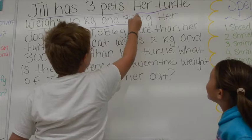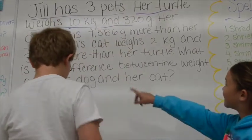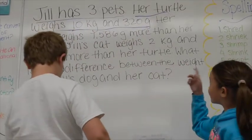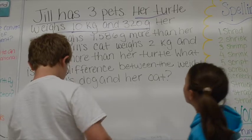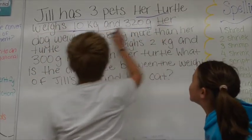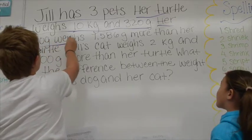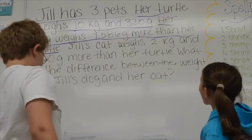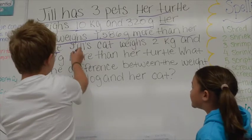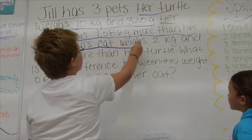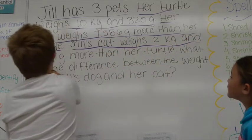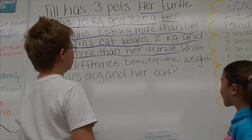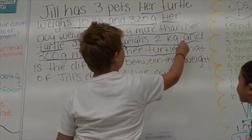So what do you do first? You underline what's important. Jill has 3 pets — her turtle weighs 10 kilograms and 320 grams. Then you underline: her dog weighs 7,586 grams more than her turtle. And Jill's cat weighs 2 kilograms and 300 grams more than her turtle. Then you circle the question: what is the difference between the weights of Jill's dog and her cat? Good job.